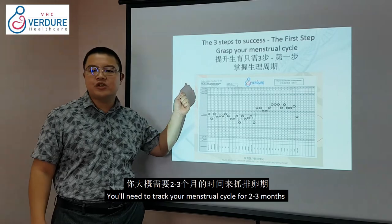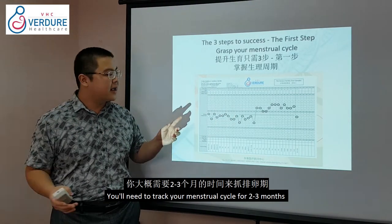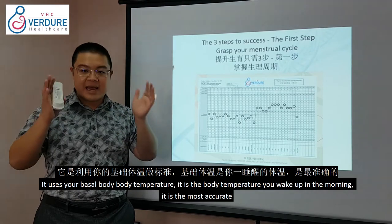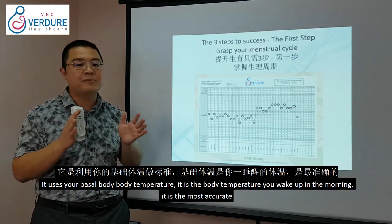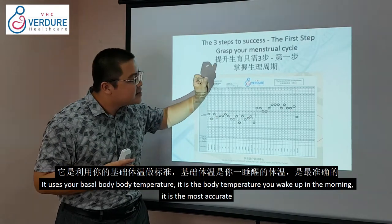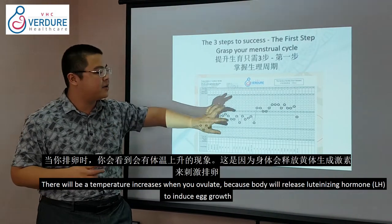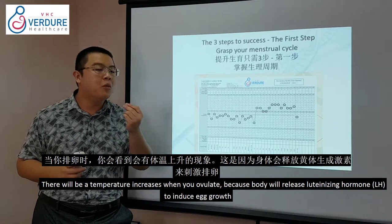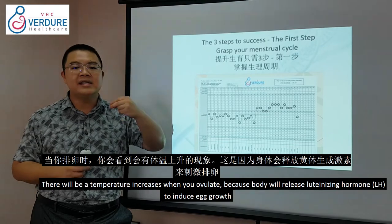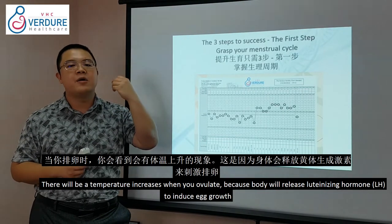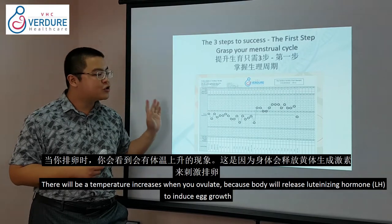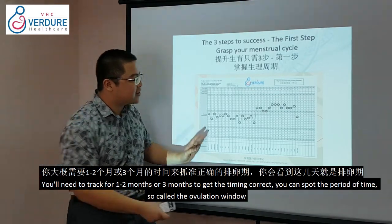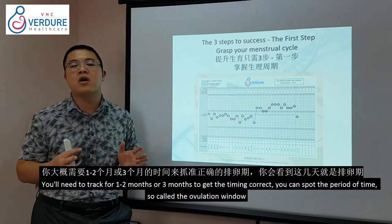For ovulation tracking, track 2–3 months of your menstrual cycle using basal body temperature — the temperature when you wake up in the morning. During ovulation, there will be a slight bump due to the luteinizing hormone, which helps eggs mature. Track this over 1–3 months to identify your ovulation window.